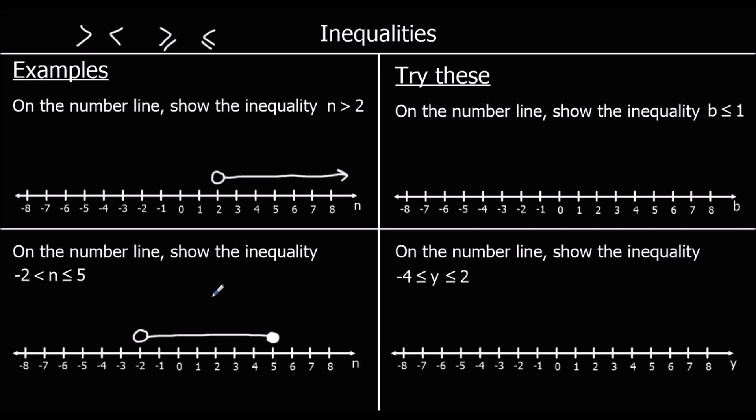Two for you to try. Pause the video and give them a go. For the first one: on the number line, show the inequality b is less than or equal to 1. The circle is at 1. It can equal it, so we colour it in. And we draw an arrow in the less than direction, that's towards the negative numbers to the left.